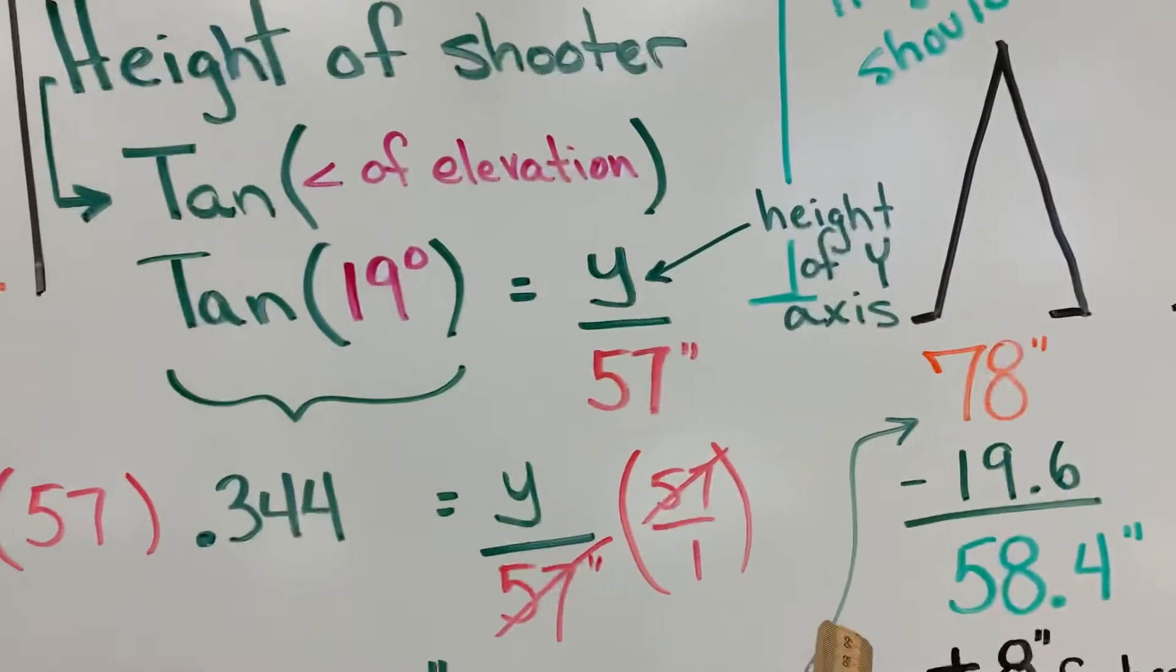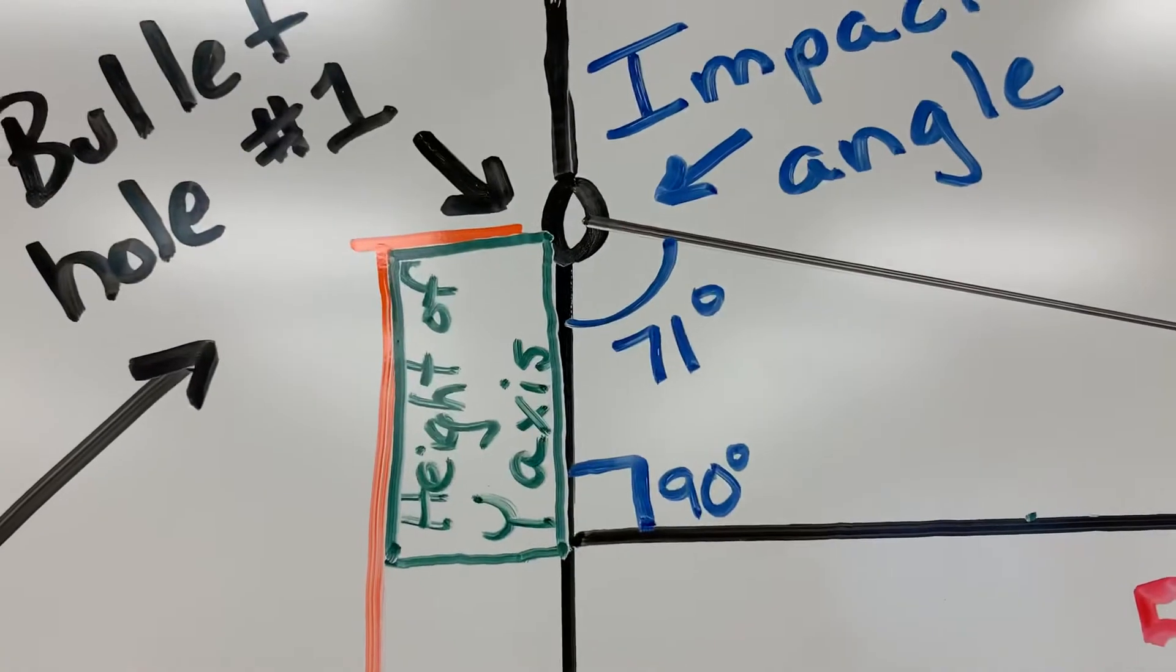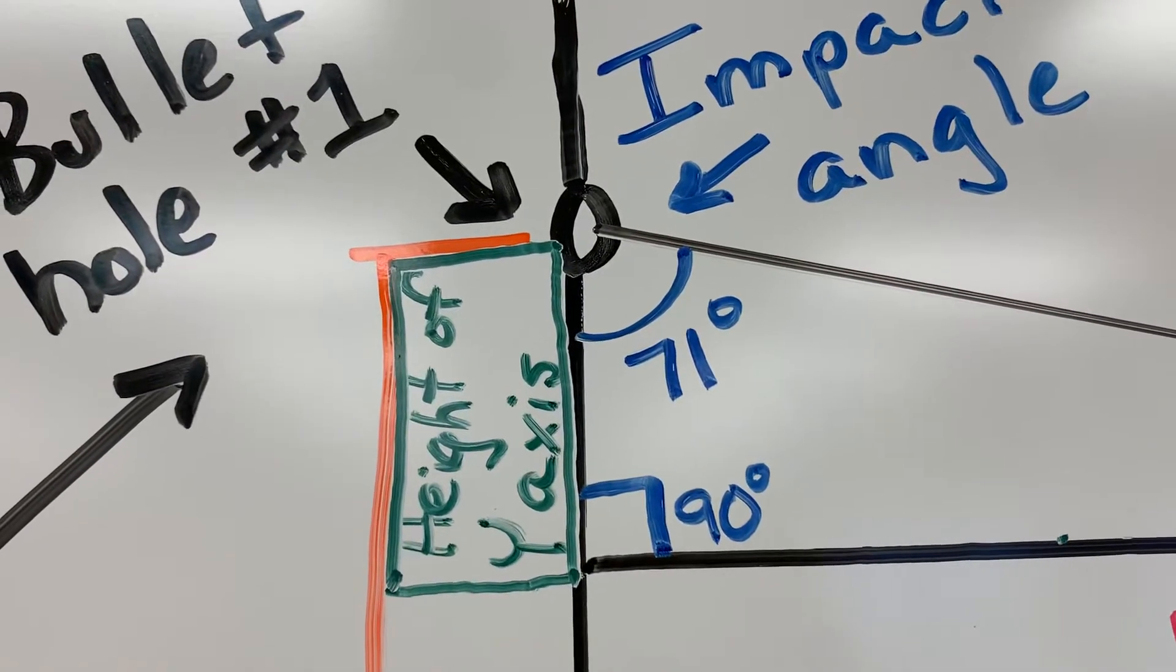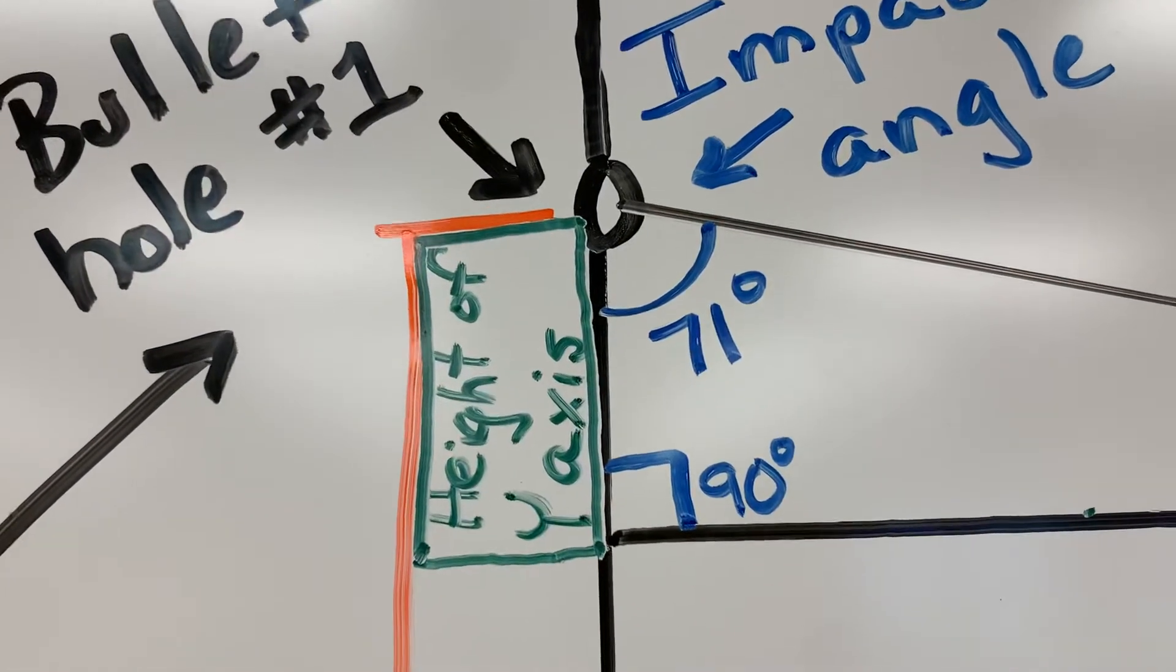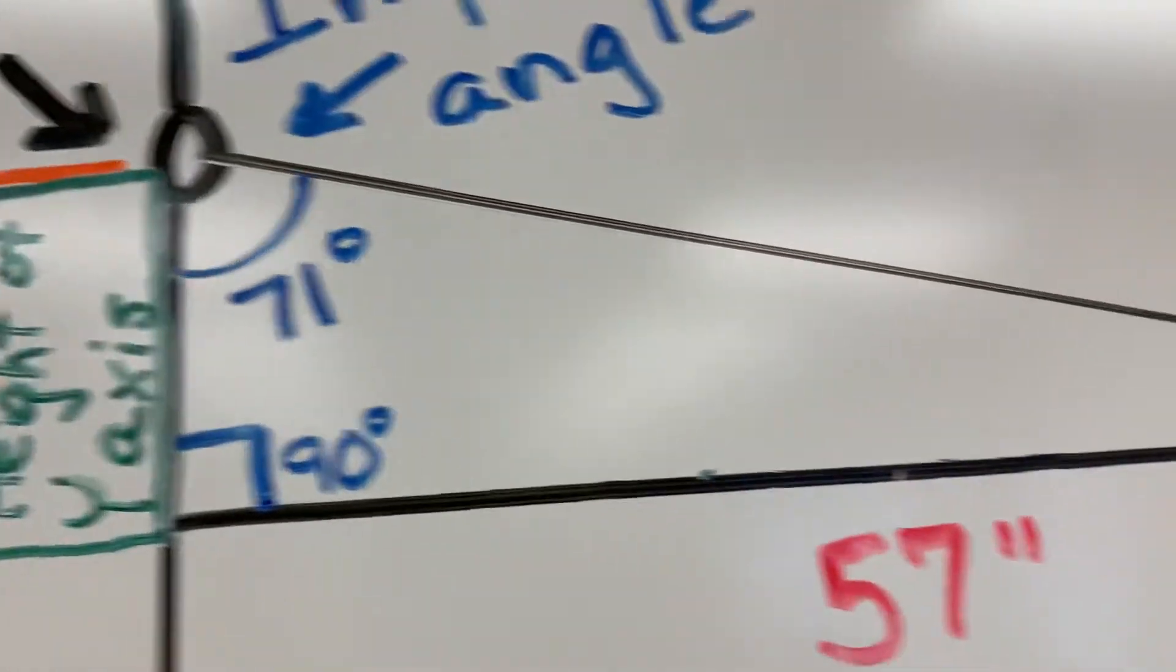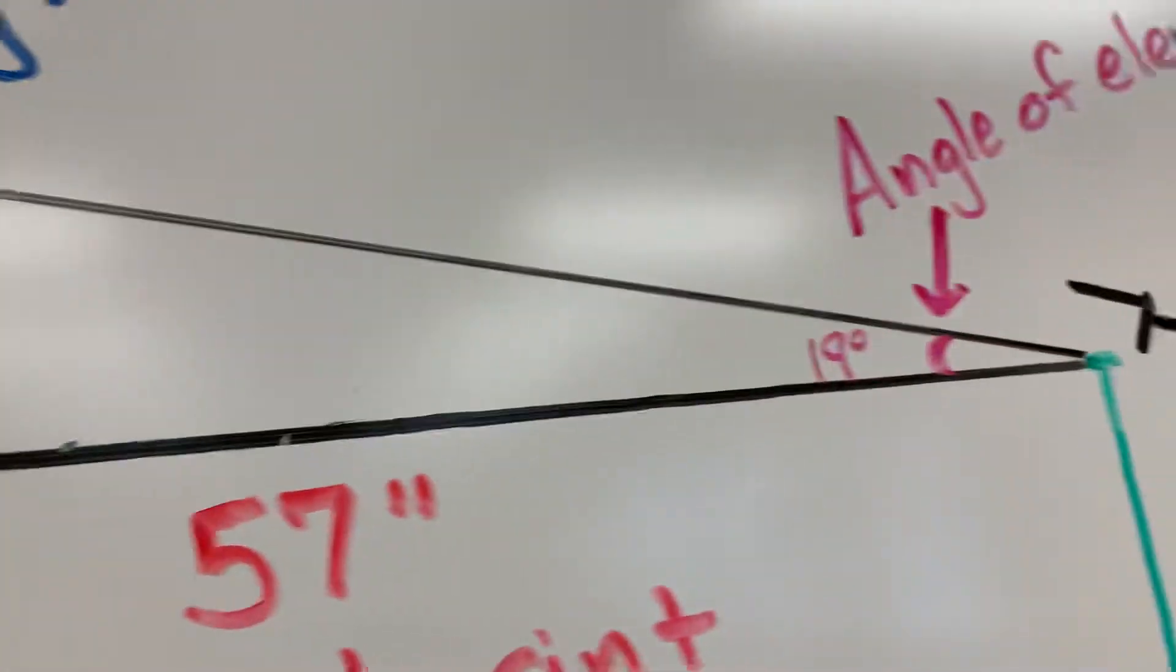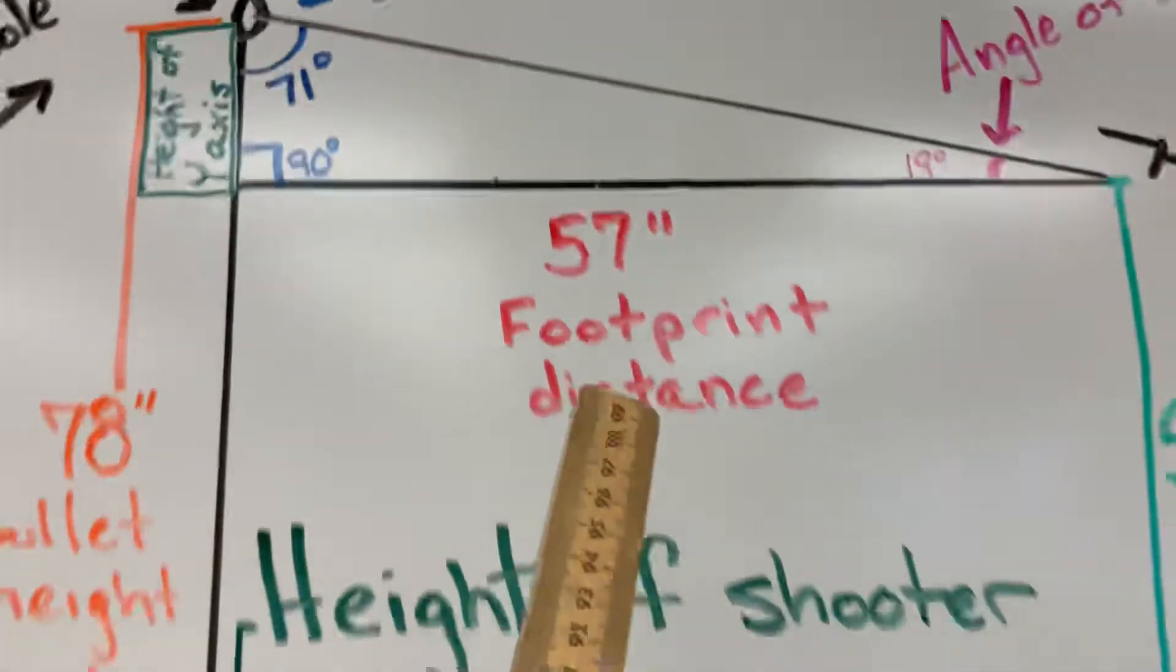Now you might be wondering, what the heck is Y? Well, Y is going to be that little section right there. That's the height of the Y axis, or in other words, how far down from the bullet hole on the wall are we coming to make this the opposite leg from that 19 degree angle? And that's going to come into play here in just a second.